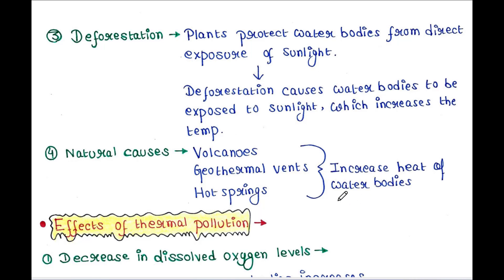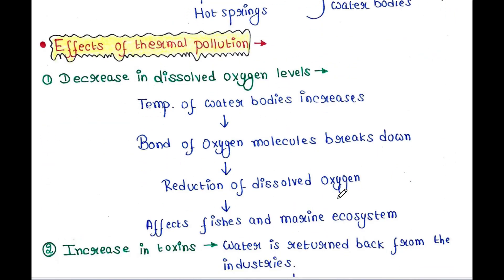Now let's discuss the effects of thermal pollution. First is a decrease in dissolved oxygen levels. When the temperature of water bodies increases, the bonds of oxygen molecules break down, leading to a reduction of dissolved oxygen, which affects fish and the marine ecosystem.